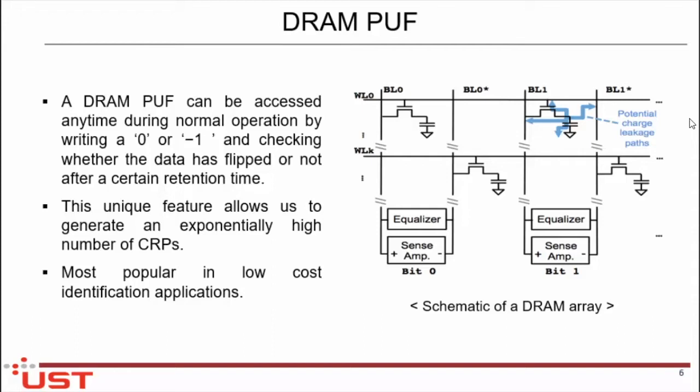As you can see in the figure, there is a leakage path. The blue line indicates the leakage path, which deals with decay over time. Capacitors always store data and require periodic refreshment. In DRAM, the rate of periodic refresh is 64 milliseconds, or sometimes 32 milliseconds. After the decay time, it exhibits PUF behavior. The most popular use of PUF technology is in the identification process in low-cost identification devices.